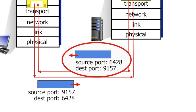That wraps up our study of multiplexing and demultiplexing. To recap: demultiplexing at the transport layer is the question of deciding which socket to deliver the segment payload to. Multiplexing means both TCP and UDP take data from multiple sockets, put that data into segments, and deliver it down to the network layer. In UDP, demultiplexing is done on the basis of the destination port number alone, while in TCP it's done on the basis of a four-tuple. Finally, multiplexing and demultiplexing happens in all layers of the protocol stack — we'll see this again at the network layer and the link layer.